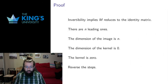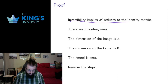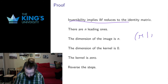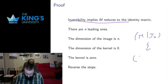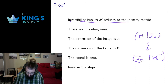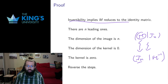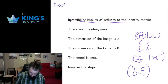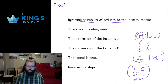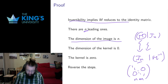Invertible matrices reduce to the identity matrix — we know that from the algorithm. To invert a matrix, we put it into an extended matrix alongside the identity, we try and row reduce, and if we get the identity on the left side then the matrix on the other side is the inverse. If we don't get the identity, the matrix is not invertible. The identity matrix has ones down the diagonal and zeros everywhere else, so an n by n matrix reducing to the identity has exactly n leading ones. That means the dimension of the image, which is the rank, which is the number of leading ones, has to be n.